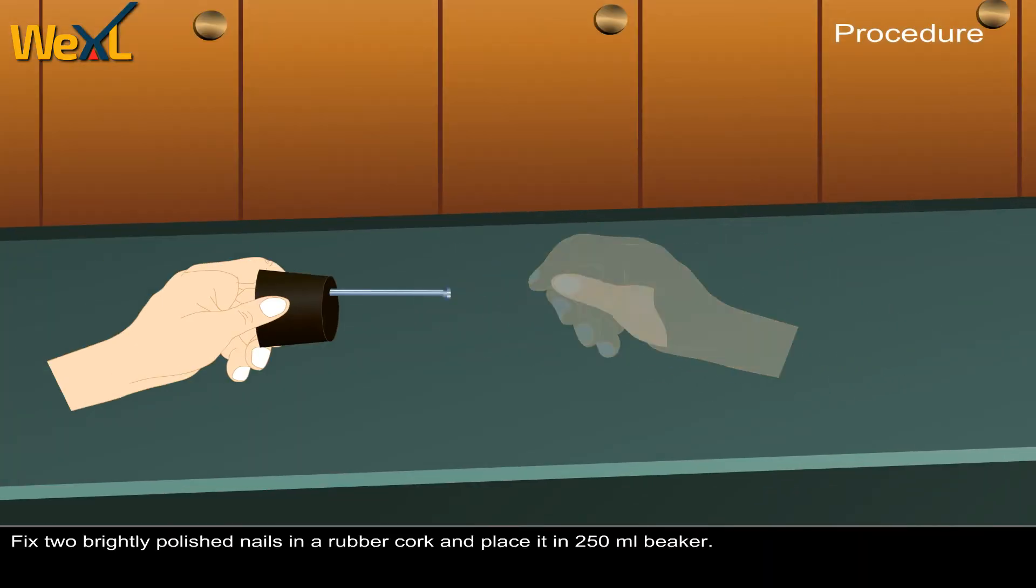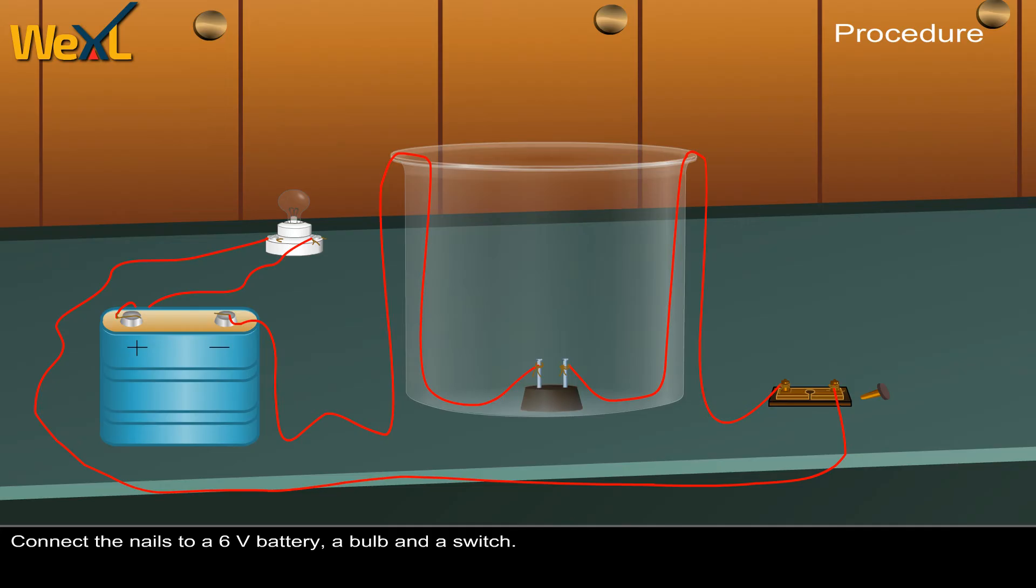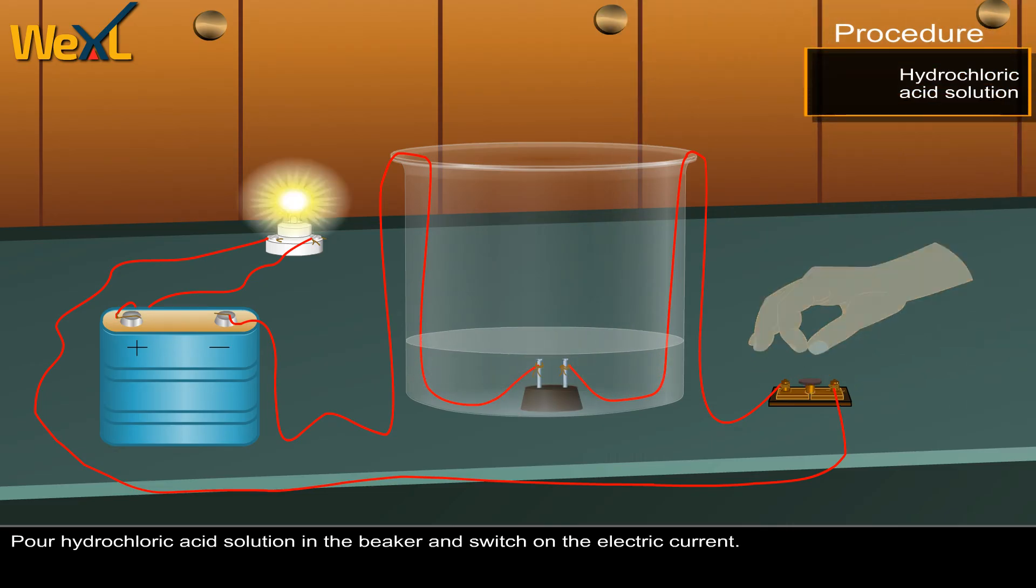Fix two brightly polished nails in a rubber cork and place it in a 250 ml beaker. Connect the nails to a 6 volt battery, a bulb and a switch. Pour hydrochloric acid solution in the beaker and switch on the electric current.